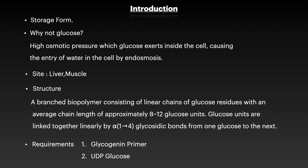Now if we look at the structure of glycogen, it is a branched biopolymer having alpha-1,4 as well as alpha-1,6 linkages. The linear glucose units are joined together by alpha-1,4 linkages, and the branching is by alpha-1,6 linkages.